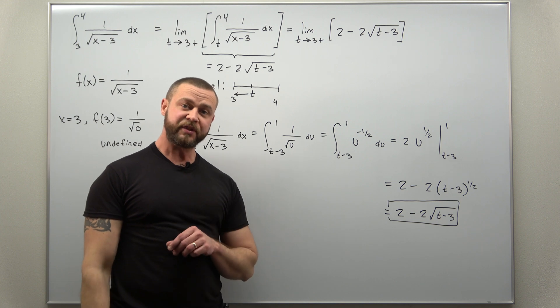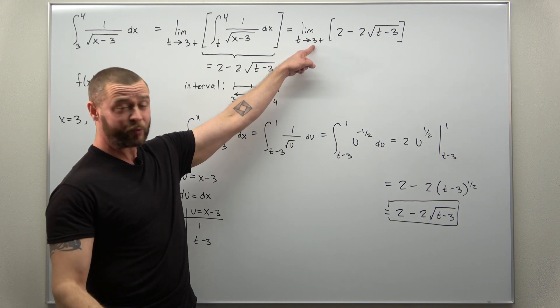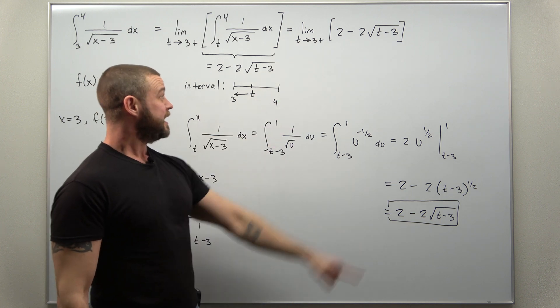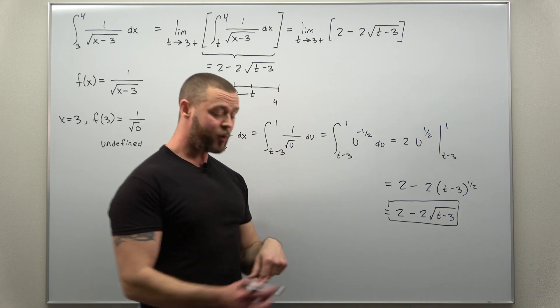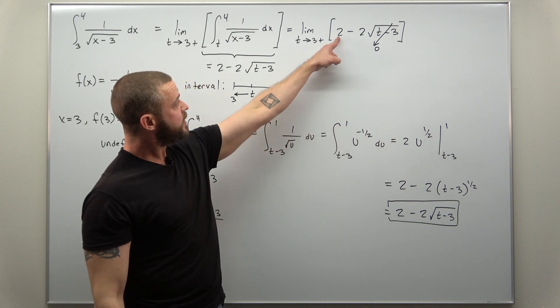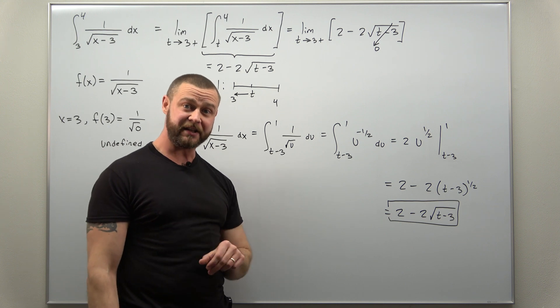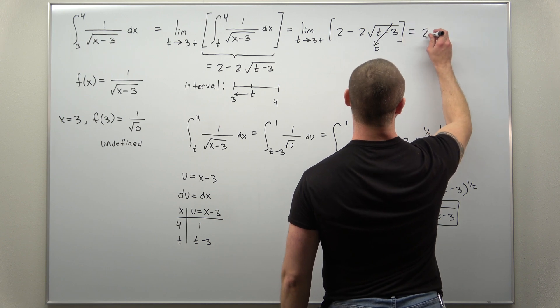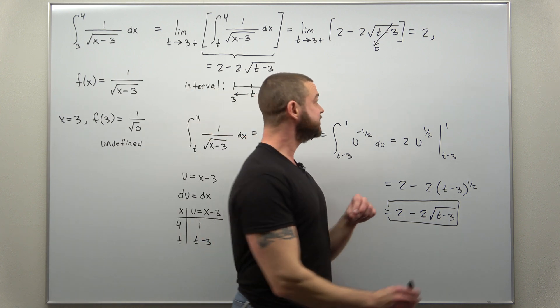Recall some basics with limits—ideally you want to try maybe plugging in. If you plug in t equals 3, approaching from the right side doesn't affect plugging in. If you plug in t equals 3, you get the square root of 3 minus 3, square root of 0. This term is going to approach 0 in the limit. The 2 here in the front has no t's on it, so that's going to remain constant as t approaches 3 from the right. So we get as our limit here, which does exist, the limit exists and approaches 2.